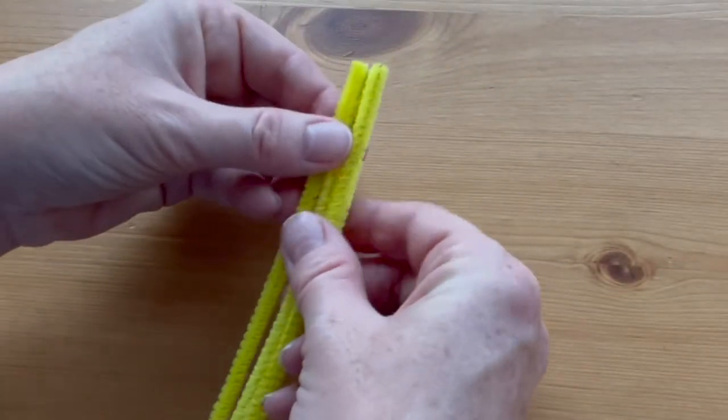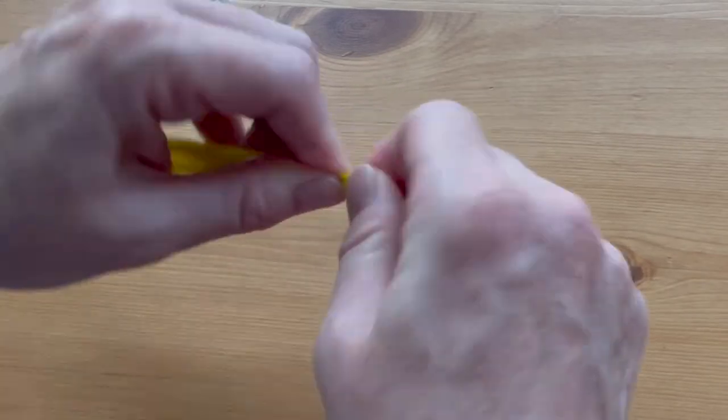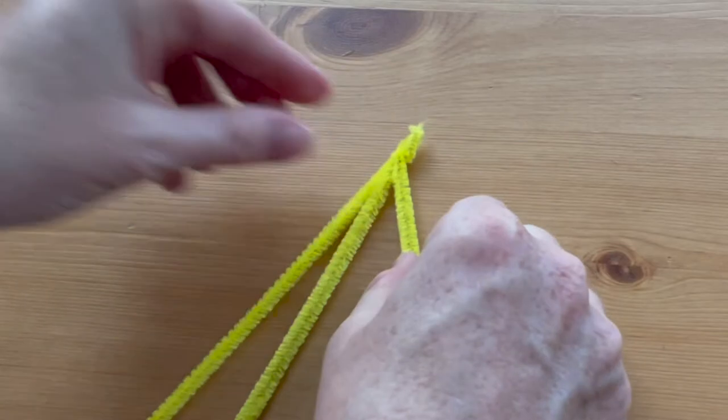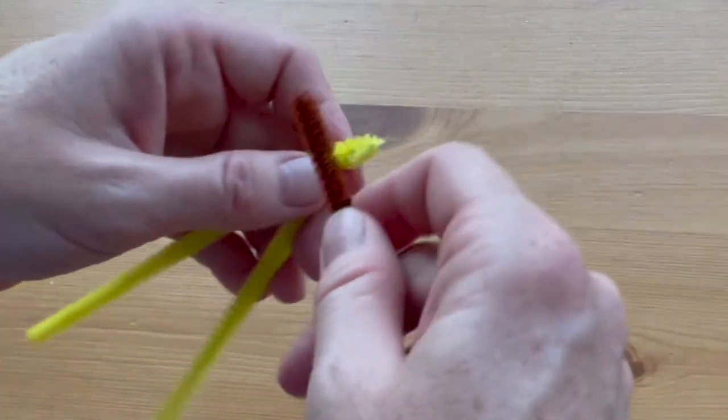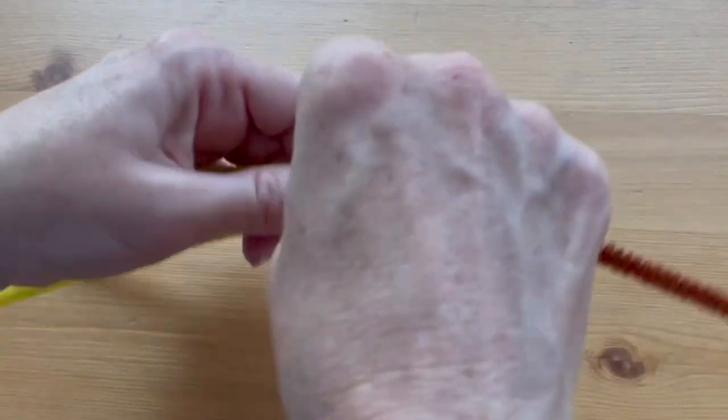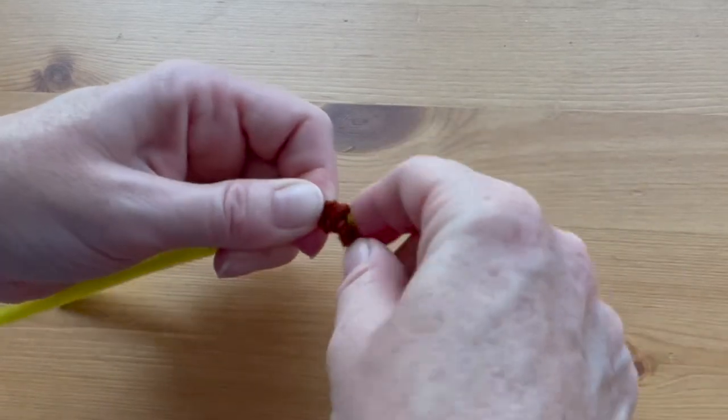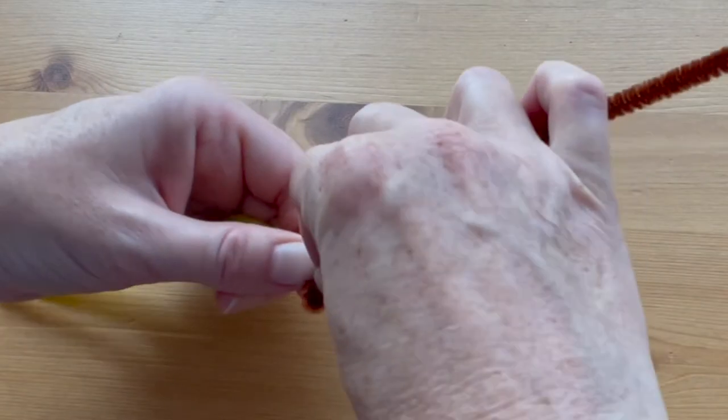Hold the three pieces together at the top and twist the very end a few times to hold everything together. Hold the end of the brown pipe cleaner at the very base of the twist and wrap it carefully around one coil next to the other to hide that top of the yellow pipe cleaners.